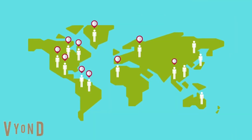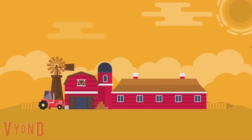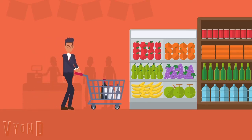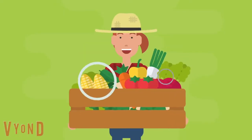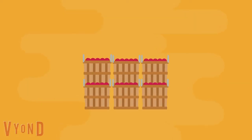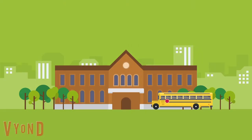There are many ways to access food all around the world and in your communities. Food access locations include farms, grocery stores, farmers markets, food pantries, community gardens, and school gardens.